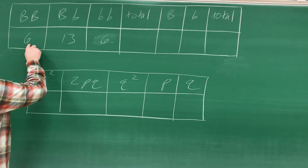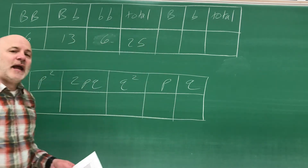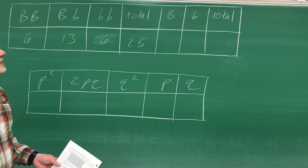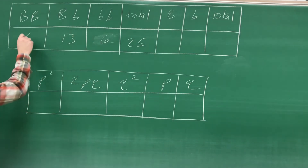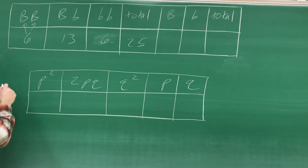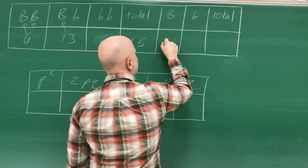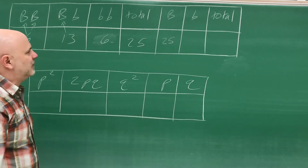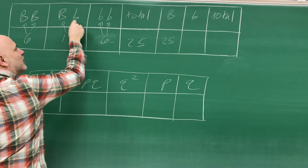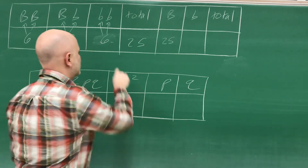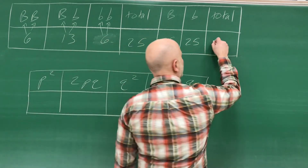So our total here is six plus 13 is 19 plus six more is 25. That's what you should have because you put in 50 beans. To figure out how many big B alleles we have: you have six of those big Bs from the homozygous dominants, plus six big Bs from the heterozygotes — that's 12 — and then 13 more big Bs, so that's 25. For little Bs: six plus six is 12 plus 13 is 25. That makes sense because that's how many you put in. The total together is 50.